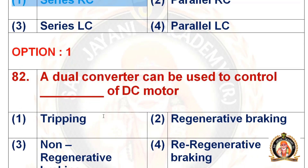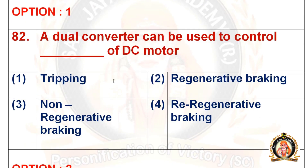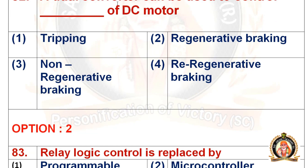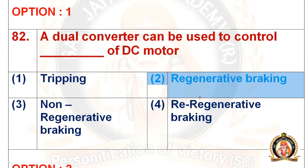Move on to the 82nd question: a dual converter can be used to control the dash of a DC motor. The options are: tripping, regenerative braking, non-regenerative braking, and re-regenerative braking. The right option is the second one — regenerative braking. A dual converter can be used to control the regenerative braking of a DC motor.